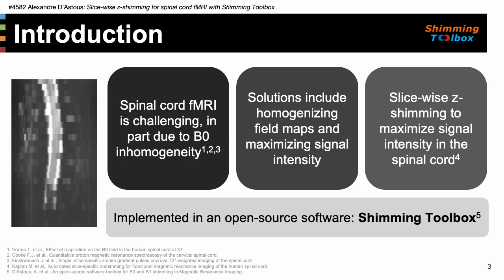Solutions exist that are based on field maps and aim at homogenizing that field, but a complementary approach is based on maximizing the signal intensity in a region of interest. One of these methods consists in applying different z-shim gradients to different EPI volumes and selecting the gradient that results in the highest signal intensity in the region of interest for each slice.